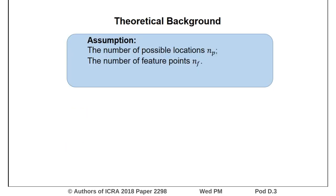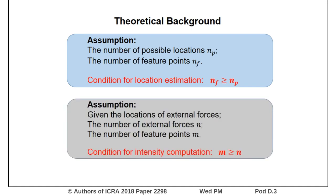It is necessary to know how many feature points are needed. The number of feature points depends on the number of possible locations. In order to estimate the location, we prove that the number of feature points should be larger than that of possible locations. To compute the intensity, the number of feature points should be no less than the number of locations.